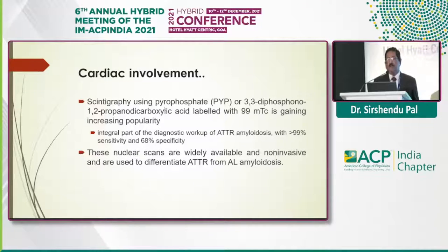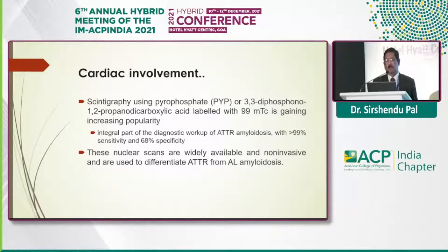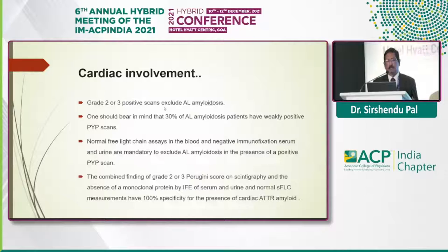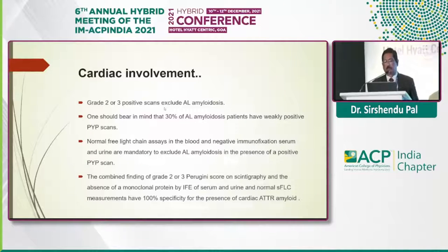Scintigraphy using pyrophosphate or 3,3-diphosphono-1,2-propanodicarboxylic acid labeled with 99m-technetium is gaining increasing popularity and forms an integral part of the diagnostic workup of ATTR amyloidosis, with more than 99 percent sensitivity and 68 percent specificity. These nuclear scans are now widely available and non-invasive, used to differentiate ATTR from AL amyloidosis. Grade 2 or 3 positive scans essentially exclude AL amyloidosis, though 30 percent of AL amyloidosis patients have weak positive scans. Normal free light chain assay in blood and negative immunofixation in serum and urine, combined with a Perugini grade 2 or 3 score on scintigraphy, is 100 percent specific for cardiac ATTR amyloid.